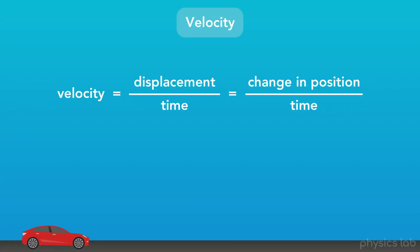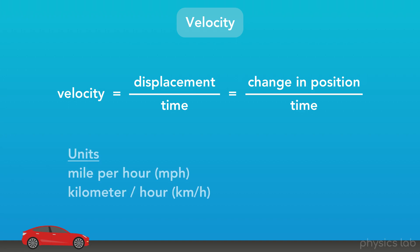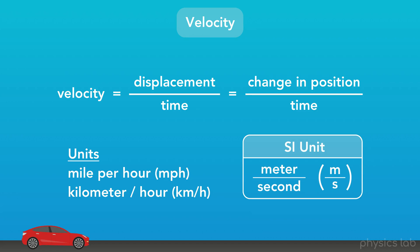Velocity is defined as the displacement of an object divided by the amount of time it takes that object to travel, which is the same thing as the change in position over time. There are some common units we could use to describe velocity or speed, such as miles per hour or kilometers per hour, but the SI unit of velocity in physics is meters per second, abbreviated as m/s.